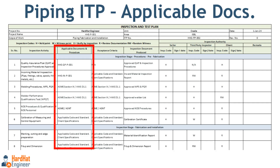The next column is Applicable Documents and Procedure. It specifies the standards, codes, specifications, procedures, or criteria to be followed for each inspection or test. Material standards like ASTM and ASME B31.3 are widely used for process piping, defining the specifications for materials used in construction. Welding standards such as ASME Section IX cover the development of Welding Procedure Specifications (WPS) and the qualification of welders, ensuring consistent and high-quality welding practices.